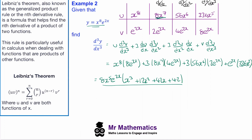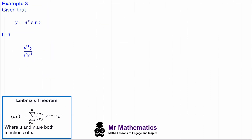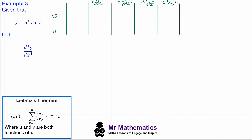In Example 3 we're going to find the fourth derivative of e^x·sin(x). The first thing we do is find up to the fourth derivative of each function. Since u = e^x, all its derivatives are e^x. For v = sin(x): the first derivative is cos(x), the second is −sin(x), the third is −cos(x), and the fourth derivative takes us back to sin(x).